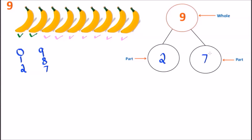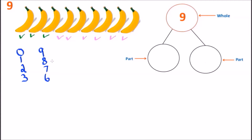Let's go back and take a look at the bananas and see what the next number bond we can create is. One, two, and three — we'll put down the number three as the first part. How many bananas remain? One, two, three, four, five, and six — we have six bananas remaining. So we have the number three on the left side and the number six on the right side. Three and six together give us the number nine.